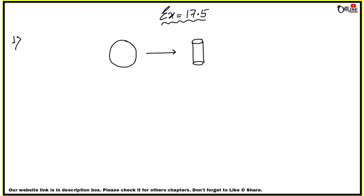So here we have a sphere. The volume of a sphere is 4/3 π r³, where r is the radius. The volume of a cylinder is π r² h, where h is the height and r is the radius.